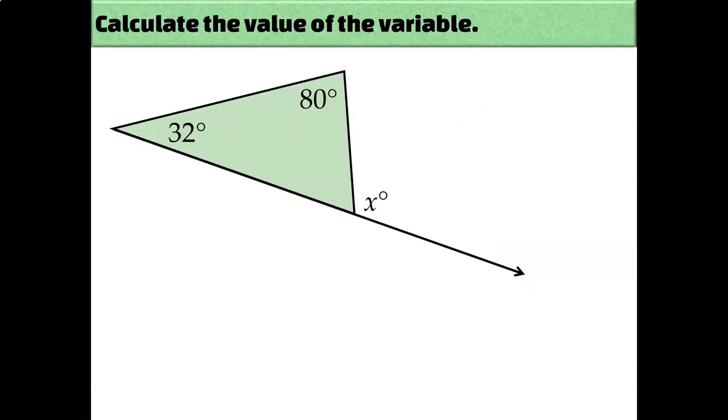And that allows us to solve problems like this really easily. X represents an exterior angle measurement, and 32 degrees and 80 degrees are the two non-adjacent interior angles of that triangle. The exterior angle theorem tells us that we can add those two non-adjacent angles together and get the value of X. X has to be 112 degrees because of the exterior angles theorem.